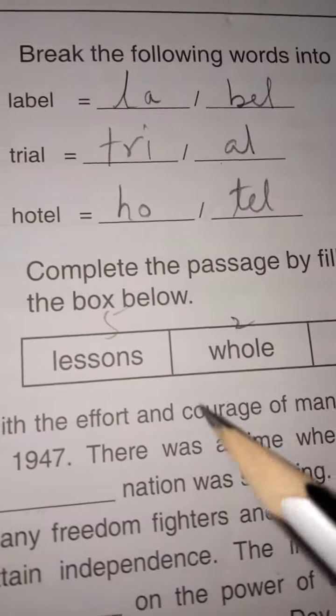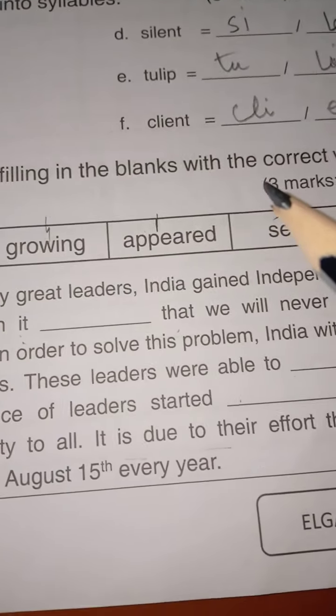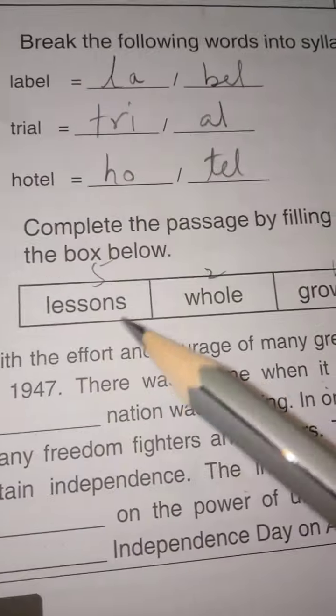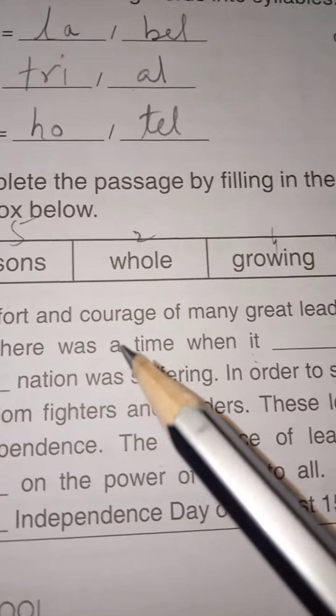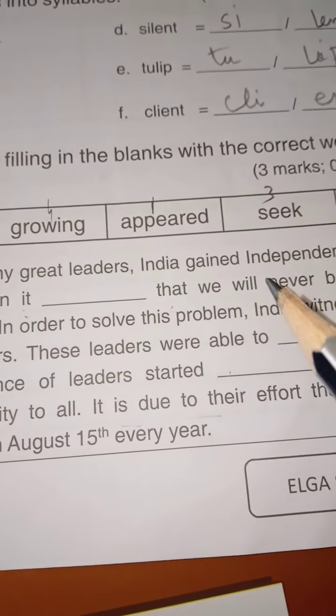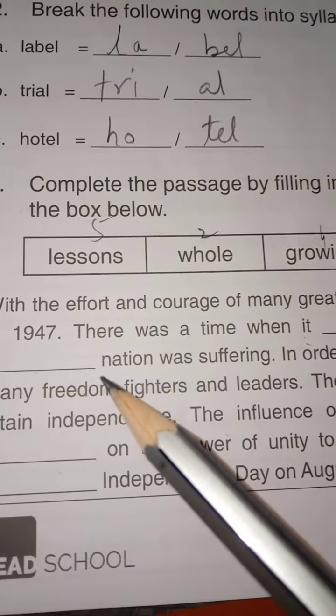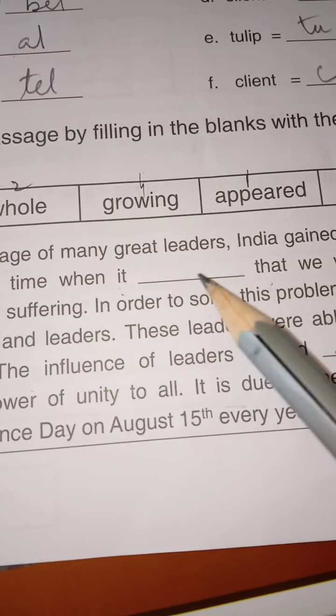Now, question number 3. Complete the passage by filling in the blanks with the correct word from the box below. So they have given some words. You have to fill in the correct boxes. With the effort and courage of many great leaders, India gained independence from British in 1947. There was a time when it appeared.